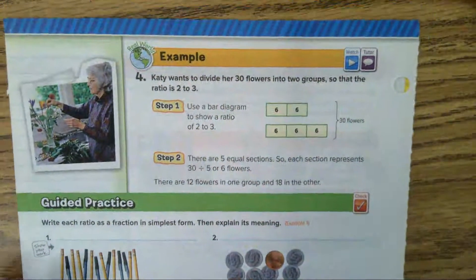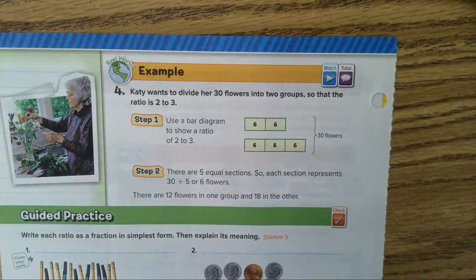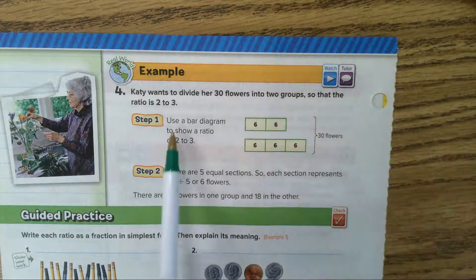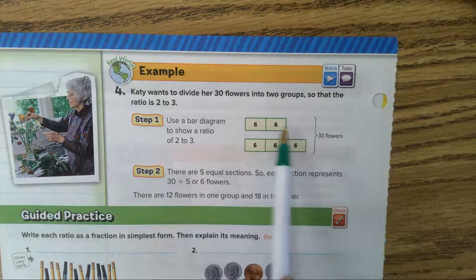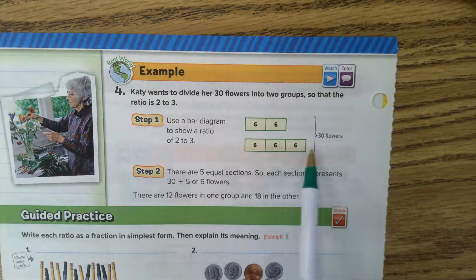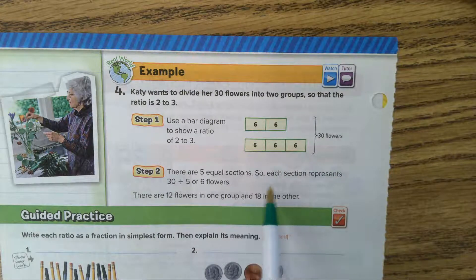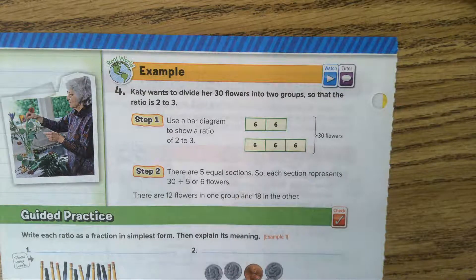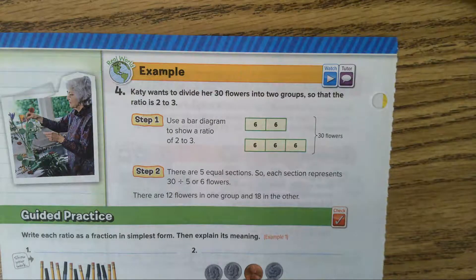Problem number 4. Kayla wants to divide her 30 flowers into two groups so that the ratio is 2 to 3. Step 1, use a bar diagram to show a ratio. If we have 2 sixes here and 3 sixes there, it equals 30 flowers. There are 5 equal sections, so each section represents 30 divided by 5 or 6 flowers. There are 12 flowers in one group and 18 in the other group.